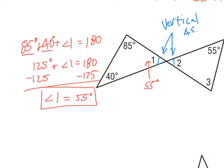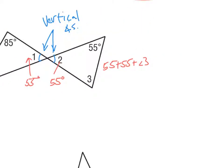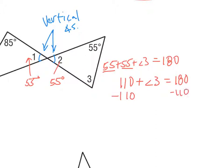Everything we've learned previously can play a part here. I can now set up an equation for the second triangle: 55 plus 55 plus angle 3 equals 180 degrees. Adding 55 and 55 gives 110, so 110 plus angle 3 equals 180. Subtracting 110 from both sides gives angle 3 equals 70 degrees.